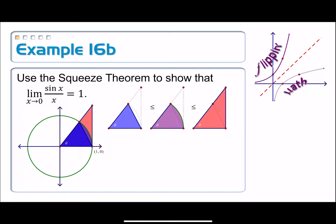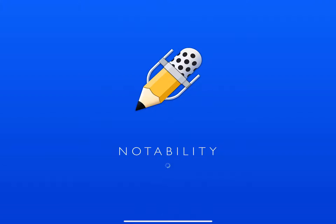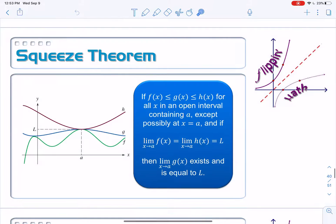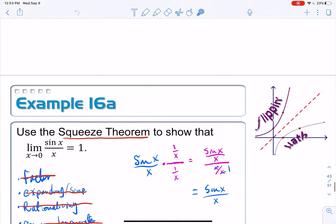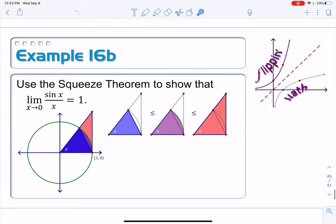I'm going to find the areas of each of these shapes over the interval from 0 to π/2, because as this angle gets wider and wider, I want to make sure these relationships still hold. So we'll cap it off from 0 to π/2 — basically quadrant one — and I'll need some space to write.